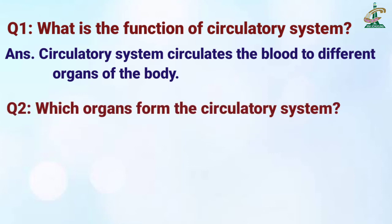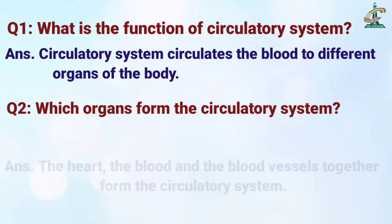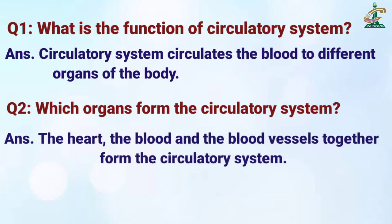And question number two is: which organs form the circulatory system? And the answer is: the heart, the blood, and the blood vessels together form the circulatory system. Memorize these two questions well at your home.